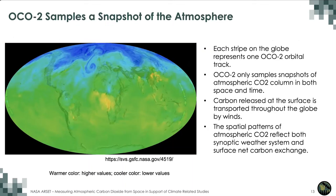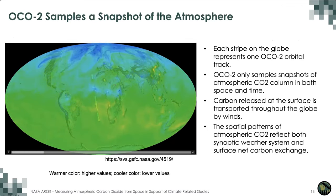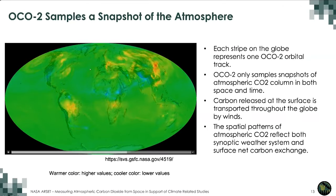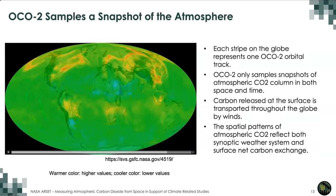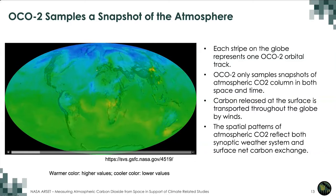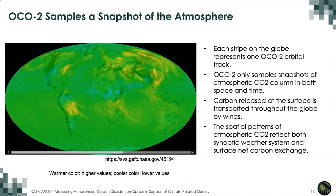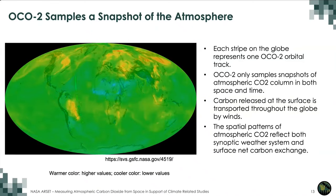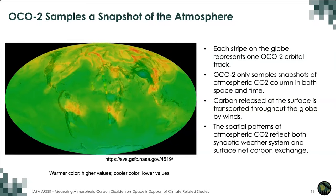This slide shows an animation of simulated atmospheric CO2 column by the atmospheric transport model. You can clearly see very active weather systems and changes of CO2 concentration with time. On top of this CO2 simulation are the OCO2 overpass tracks — the bright stripes are the OCO2 orbital tracks. OCO2 only captures a snapshot of atmospheric CO2 concentration. This animation demonstrates that the change of atmospheric CO2 concentration is due to both atmospheric transport and surface carbon fluxes.